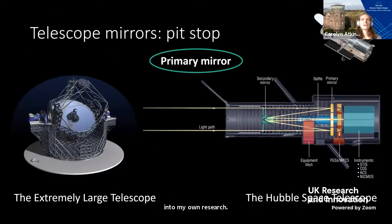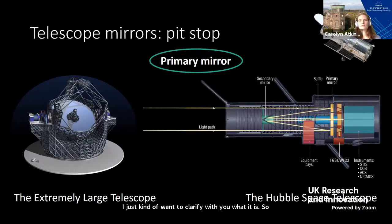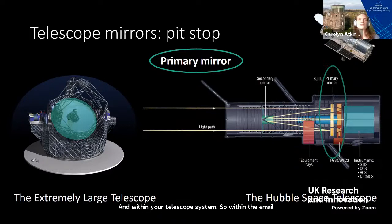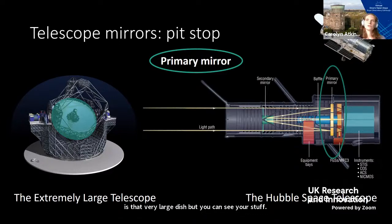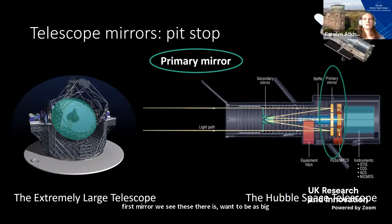Before we move on, I want to clarify one term: the primary mirror. I'm going to be saying this a lot as the talk goes on. The primary mirror is the first mirror that the light from your astronomical source hits within your telescope system. Within the ELT it is that very large dish, and within the Hubble Space Telescope you can see the light path — it is the first object that the light path hits within the telescope. These mirrors want to be as big as possible so that you can collect as many photons as possible.